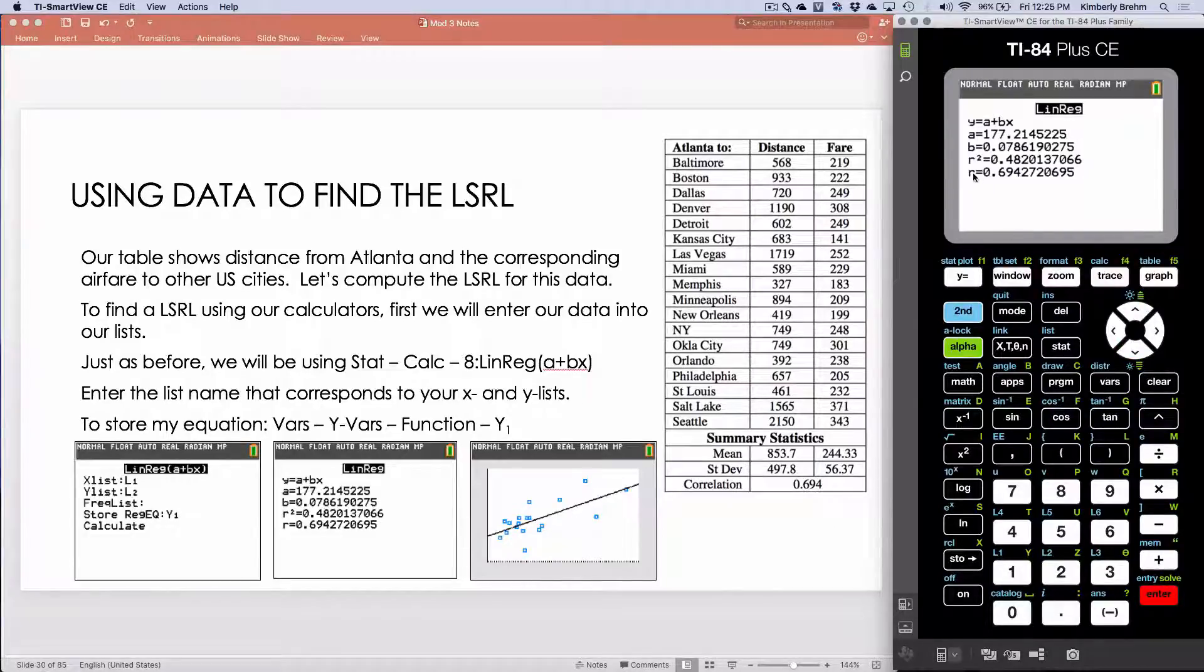So just as before, when we looked at the R value, that 0.69 tells me the strength of the relationship. But notice now it also gives me my A and my B. We haven't talked about R squared, but we have our A and our B.